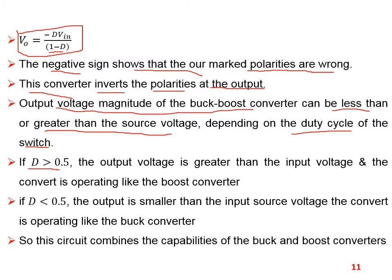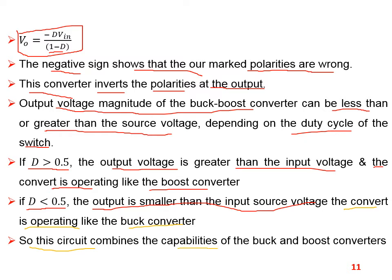If D is greater than 0.5, the output voltage is greater than the input voltage and the converter operates like a boost or step-up converter. If D is less than 0.5, the output voltage is smaller than the input voltage and the converter operates like a buck converter. If D equals 0.5, the input voltage equals the output voltage. So this circuit combines the capabilities of both the buck and boost converters in a single circuit.